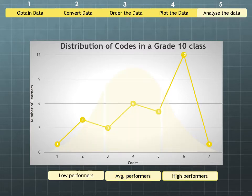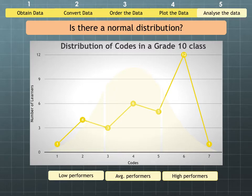The first question we need to ask is, is there a normal distribution? Well, although there is an increase in learners achieving codes one to five, there is a steep incline in learners between who are getting codes five and six. Suddenly there are a lot more of them.